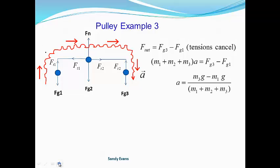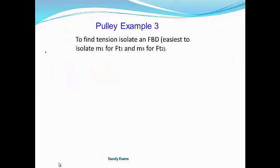Then we isolate for our acceleration and plug our numbers in. Now to find the tension — the only way to find tension is to isolate a free body diagram. It's probably easiest to isolate mass 1 to find tension 1 and mass 3 to find tension 2.